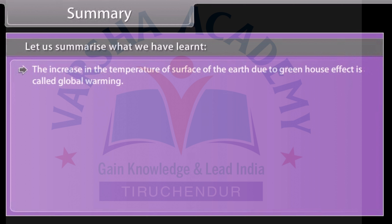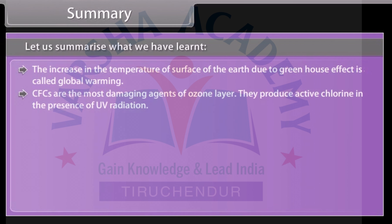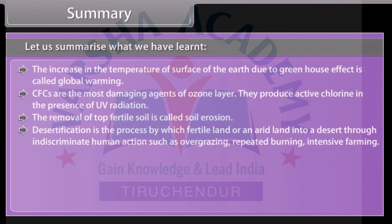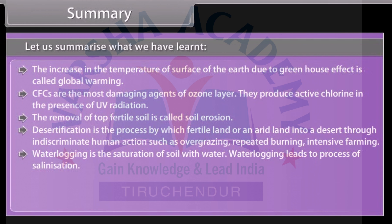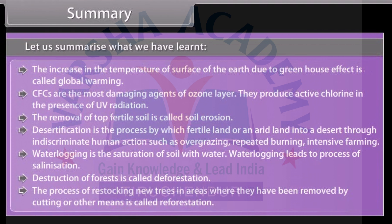The increase in the temperature of the surface of the Earth due to the greenhouse effect is called global warming. CFCs are the most damaging agents of the ozone layer; they produce active chlorine in the presence of UV radiation. The removal of top fertile soil is called soil erosion. Desertification is the process by which fertile or arid land turns into a desert through indiscriminate human actions such as overgrazing, repeated burning, and intensive farming. Waterlogging is the saturation of soil with water and leads to the process of salinization. Destruction of forest is called deforestation. The process of restocking new trees in areas where they have been removed by cutting or other means is called reforestation.